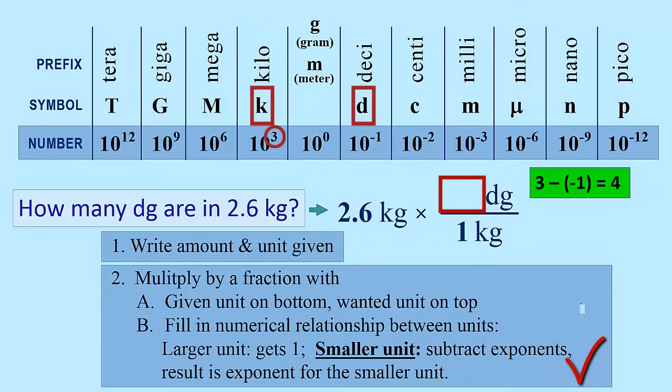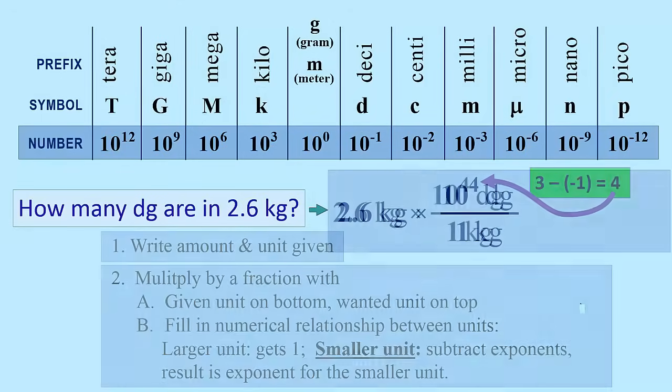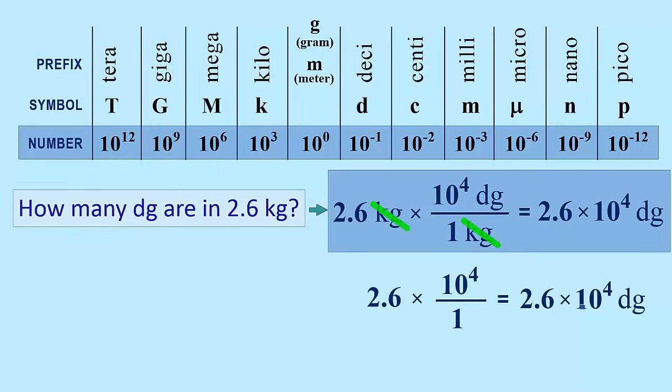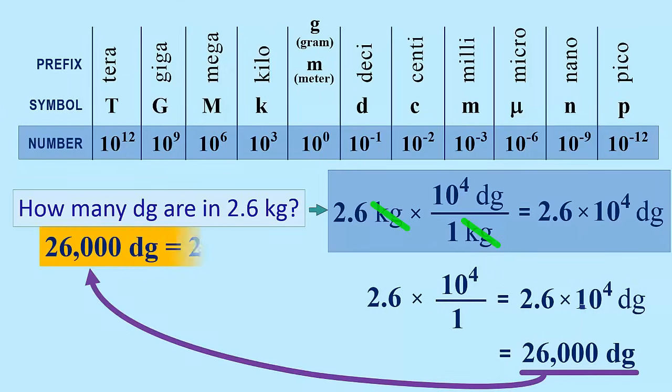Kilo has an exponent of 3, deci is negative 1, and so the difference is 4, which becomes the exponent. There is 10 to the 4th or 10,000 decigrams for every 1 kilogram. With this setup, the kilograms cancel, leaving the desired unit decigram. Do the math and we get 2.6 times 10 to the 4th decigrams. We have determined there are 26,000 decigrams in 2.6 kilograms.